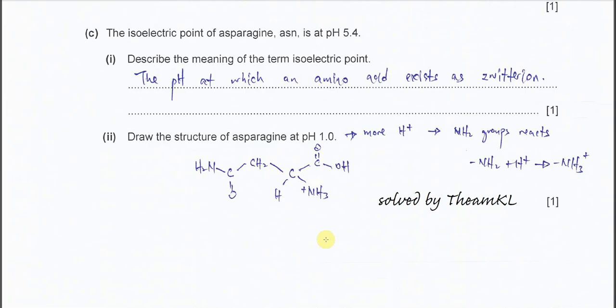Part C. The isoelectric point of asparagine (short form ASN) is at pH 5.4. Part 1: Describe the meaning of the term isoelectric point. It's the pH at which amino acid exists as the zwitterion. Zwitterion is a dipolar ion which is formed by the amino acid.